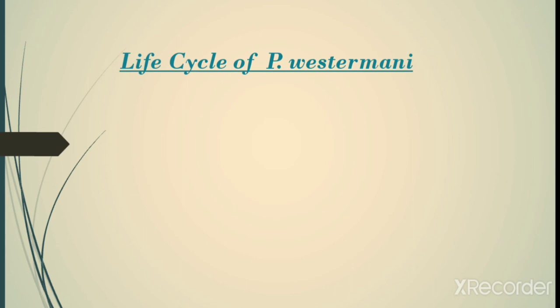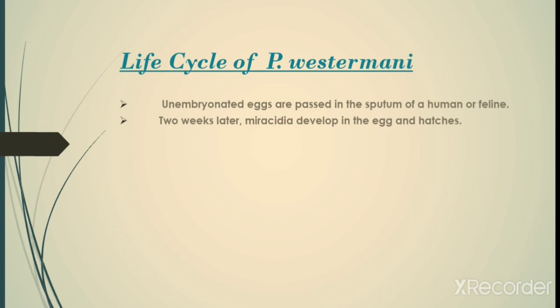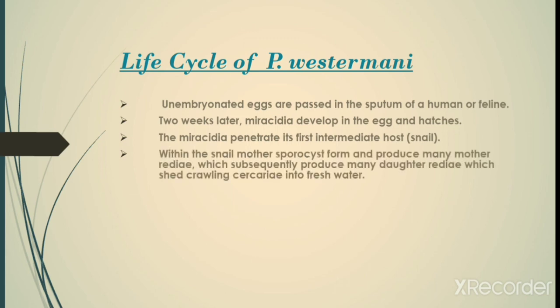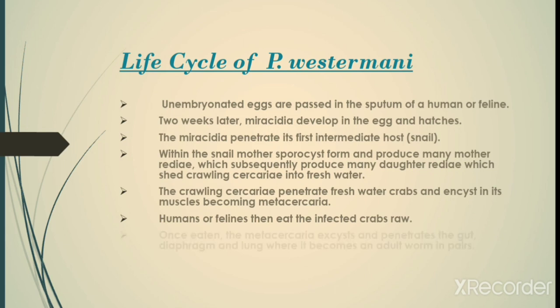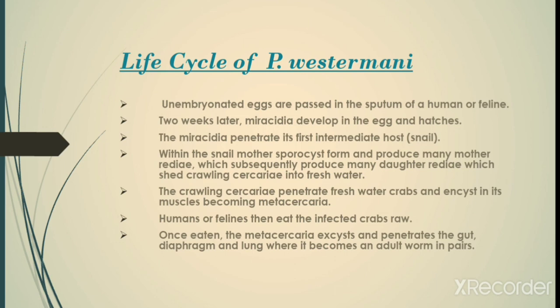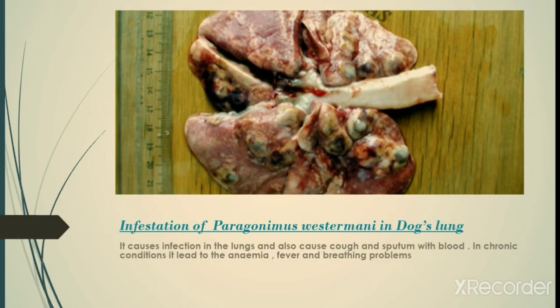The life cycle of Paragonimus westermani consists of the following steps: embryonated eggs are passed in the sputum of a human host; two weeks later miracidia develop in the eggs and hatch. The miracidia penetrate their first intermediate host, a snail. Within the snail, mother sporocysts form and produce many redia, which subsequently produce many daughter redia, which shed crawling cercariae into fresh water. The crawling cercariae penetrate fresh water crabs and encyst in their muscles, becoming metacercariae. Humans then eat the infected crabs raw. Once eaten, the metacercariae excyst and penetrate the gut, diaphragm, and lung, where they become adults.